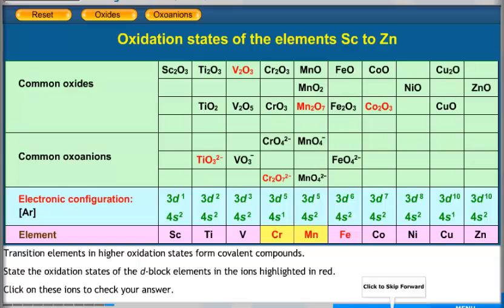Transition elements in higher oxidation states form covalent compounds. State the oxidation states of the D-block elements in the ions highlighted in red.